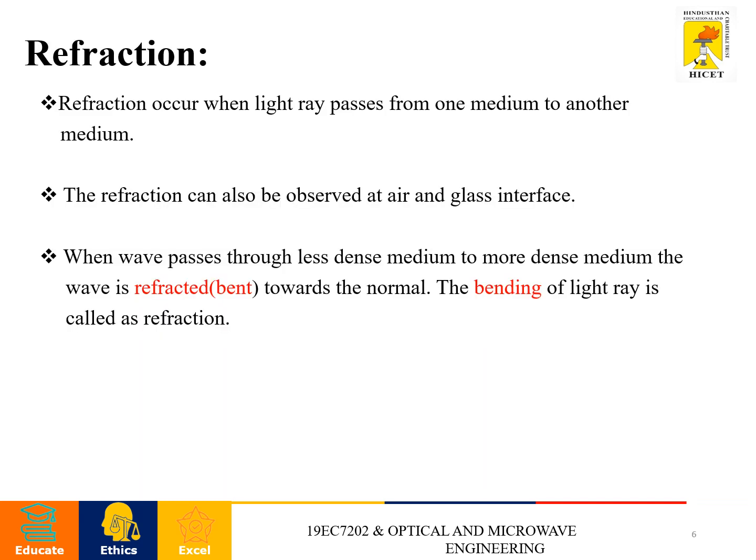Next one is refraction. Refraction occurs when a light ray passes from one medium to another medium. The refraction can also be observed at air and glass interface. When a wave passes through less dense medium to more dense medium, the wave is refracted, or bent, towards the normal. The bending of light ray is called refraction.